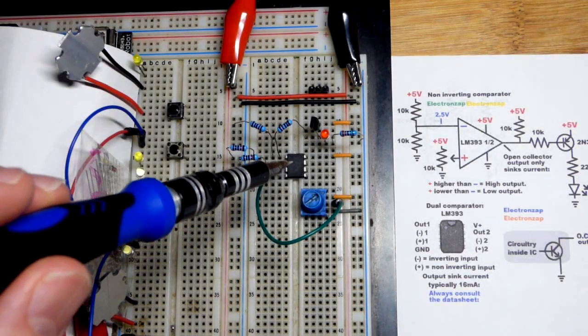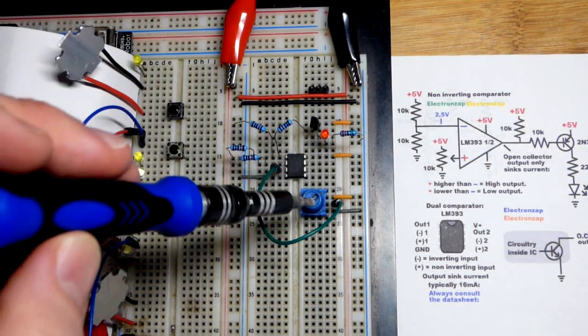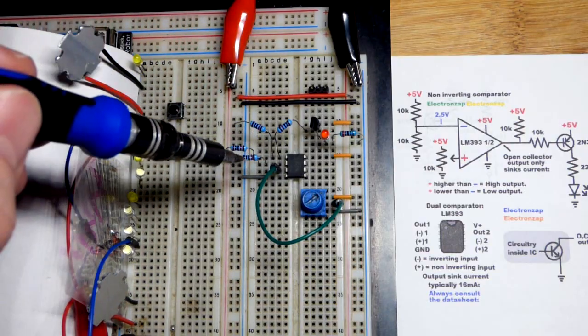So now we have the LM393 here. It's a comparator integrated circuit, and that's what we're doing. We're comparing the two voltages.